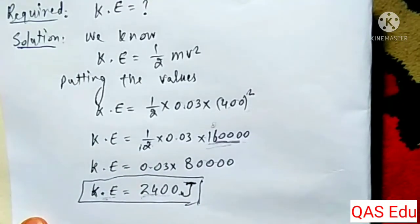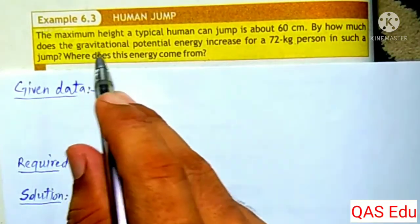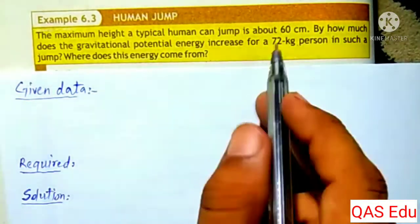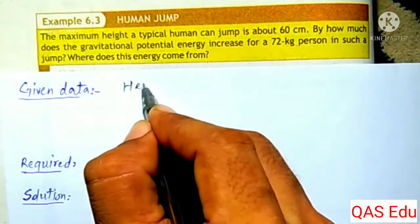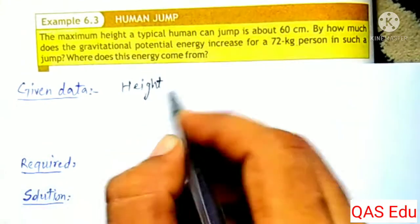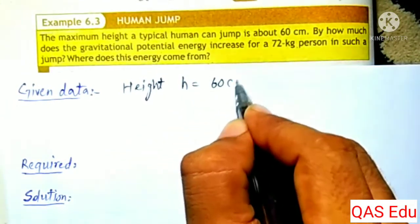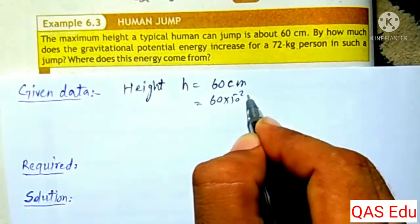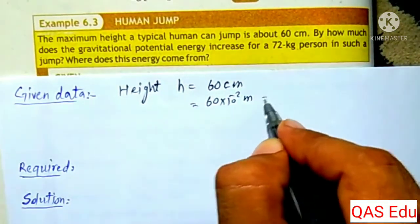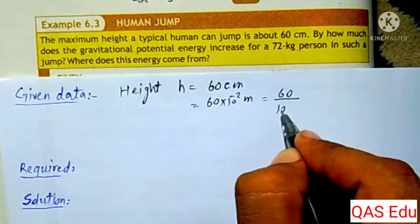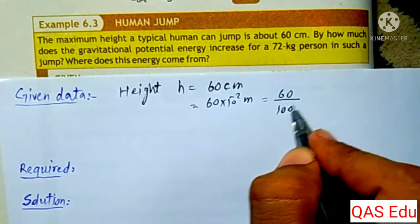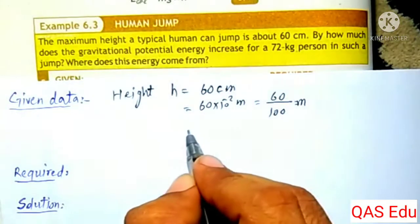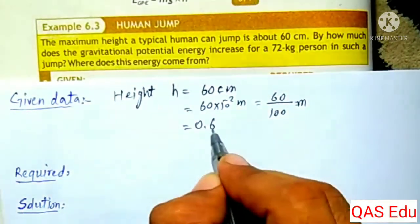The maximum height a typical human can jump is about 60 centimeters. Converting: 60 cm divided by 100 equals 0.6 meters. The height h is 0.6 meters.